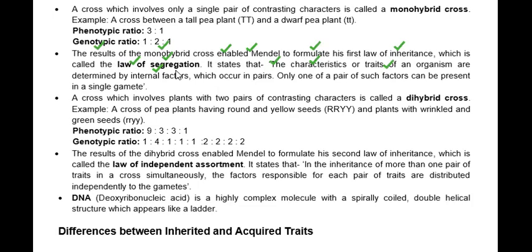Mendel called these internal factors 'factors,' not genes. The alternative pairs of characters we call alleles, also known as factors. He said that any trait of an organism is determined by internal factors that occur in pairs, and only one such factor from a pair can be present in a single gamete.